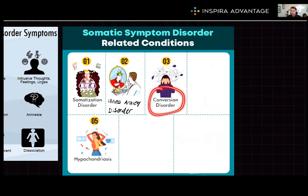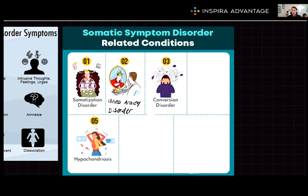Next, we have conversion disorder — unexplained symptoms affecting bodily function, often associated with prior trauma. The MCAT will often present this in an almost poetic way. For example, if a mother sees her child get hit by a semi in front of her, she might then experience blindness even though no physical trauma happened to her eyes — she is unable to look at the world anymore without her child there, developing conversion disorder resulting in blindness.